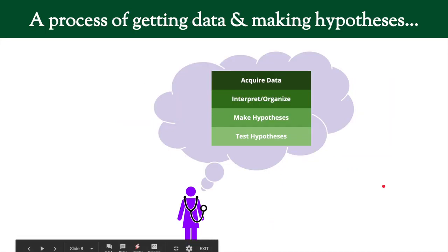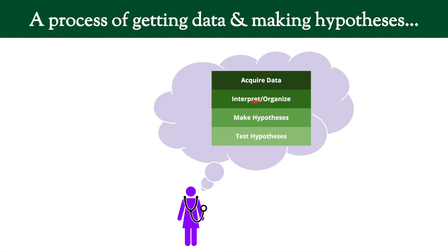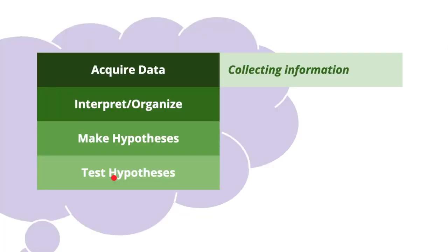There's a process of doing this, broken down into four steps. The first thing you need to do is acquire data — you collect information by taking a history, taking a physical exam, getting and ordering lab results. Knowing which things to look for is really important here; you can't order everything, so which labs do you order?